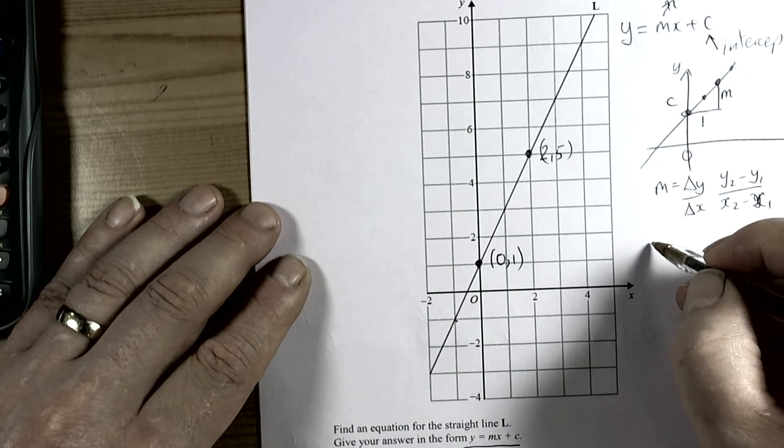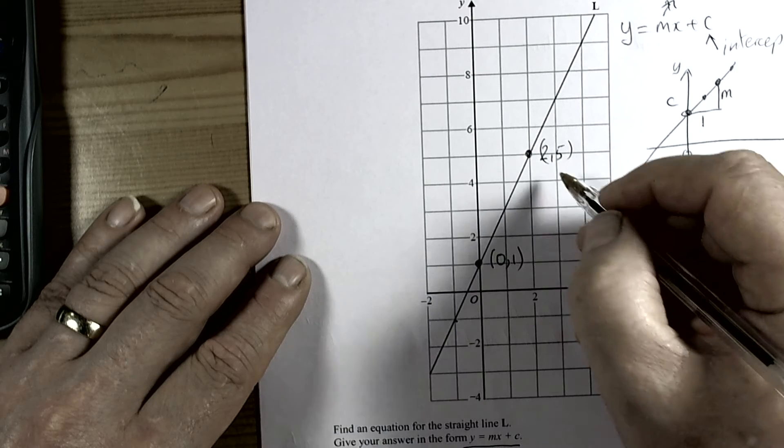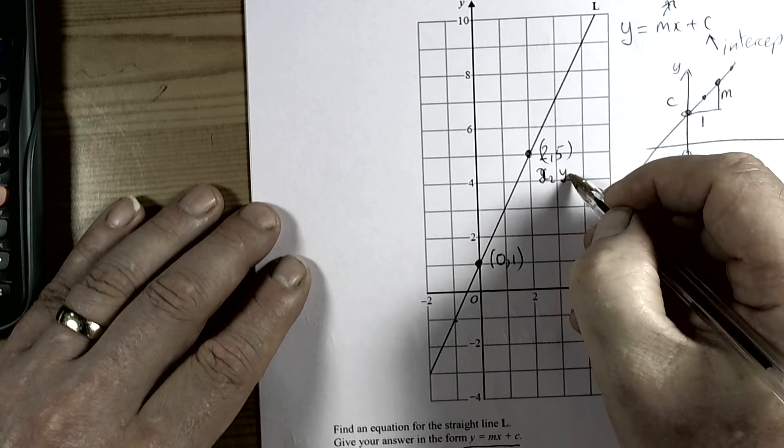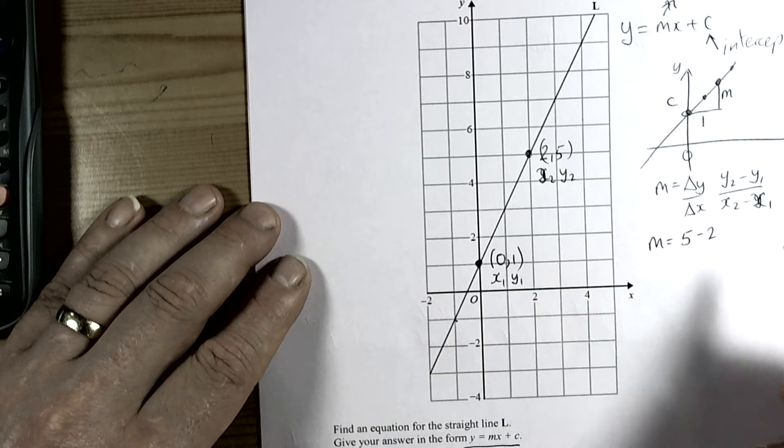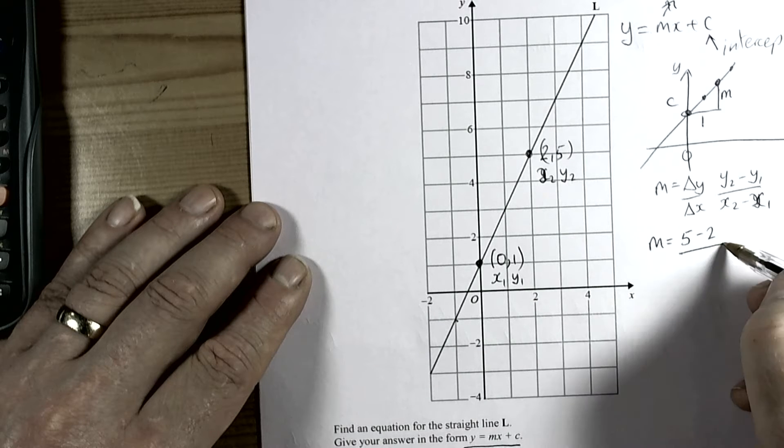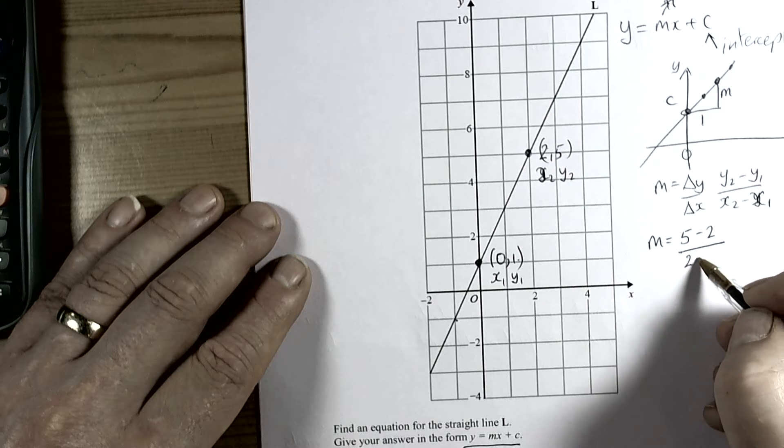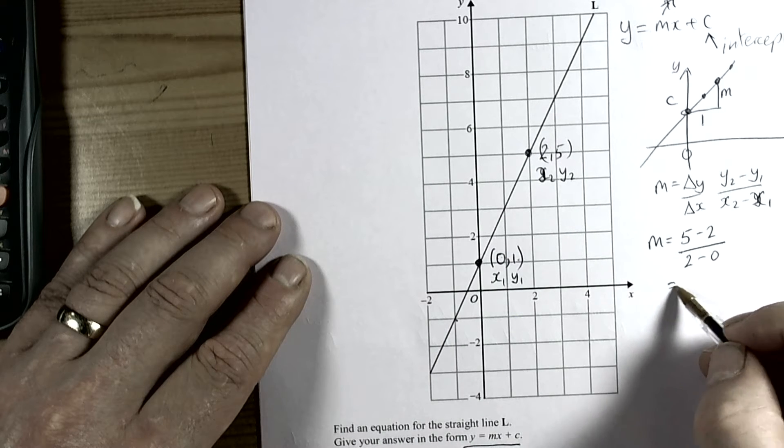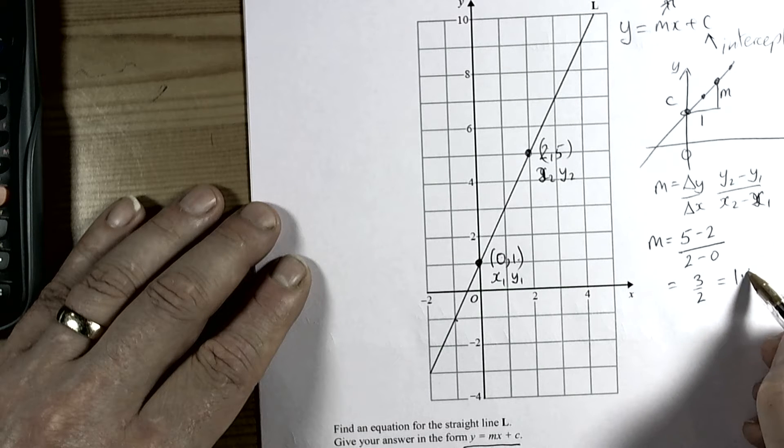To calculate the gradient, I'm going to do 5 take away 2 because this was my x₂, y₂ values, and this was my x₁, y₁ value. So 5 take away 2 for the difference in the y coordinates and then 2 take away 0 for the difference in the x coordinates, so we end up with 3 over 2, which is 1.5.